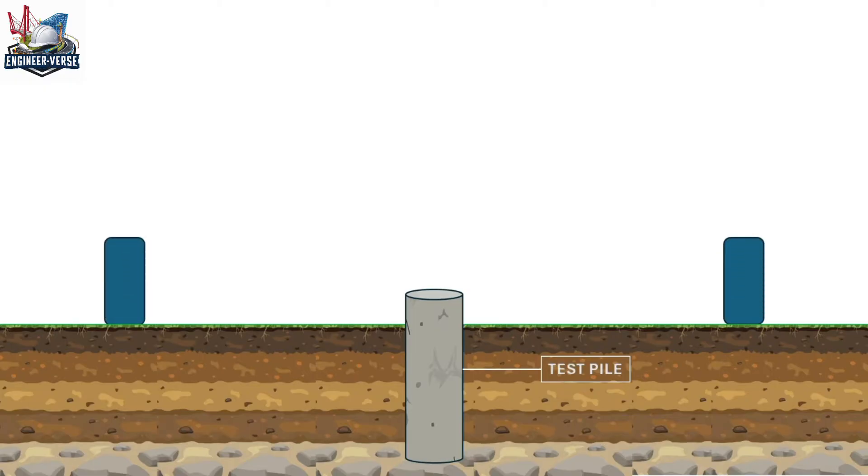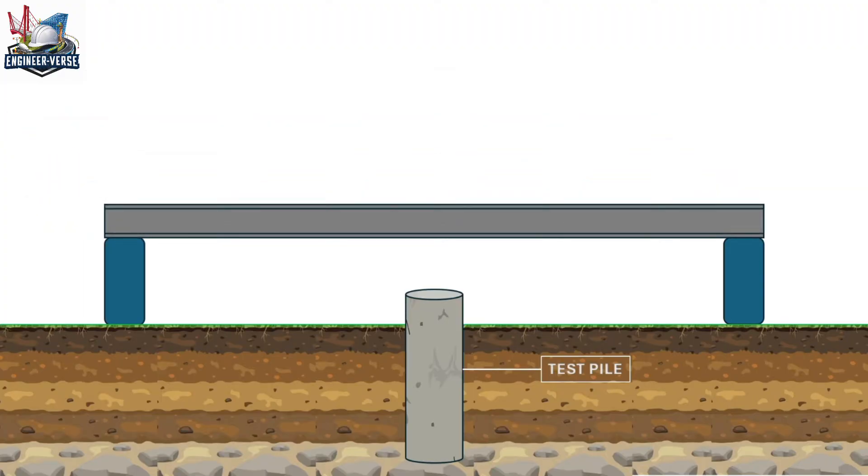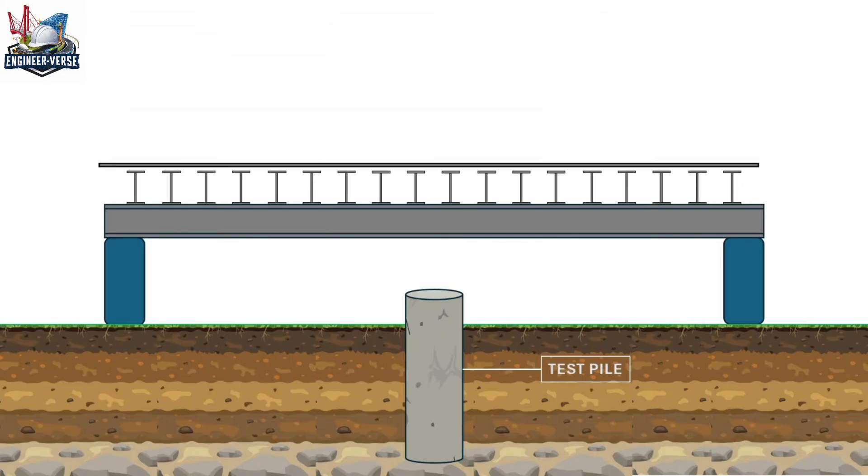Two simple supports are constructed on both sides of this pile. A main girder is placed on top of the supports and then secondary girders are placed above it. A steel plate is kept above it to provide a platform for applying the loads.